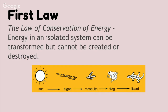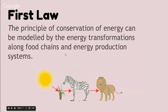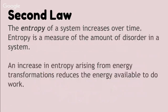When we talk about loss of energy in a system, this is actually an energy transformation, not an energy disappearance, because we know that energy cannot be created or destroyed. The principle of conservation of energy can be modeled by the energy transformations along food chains and energy production systems.